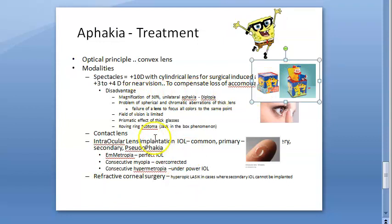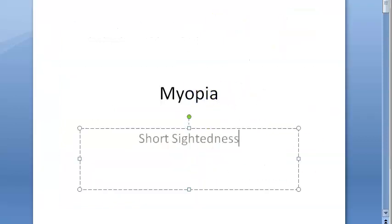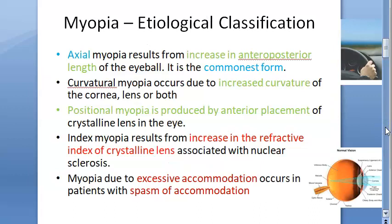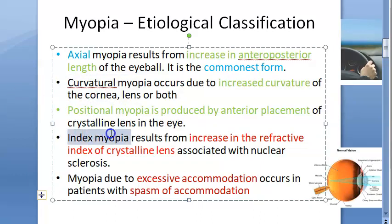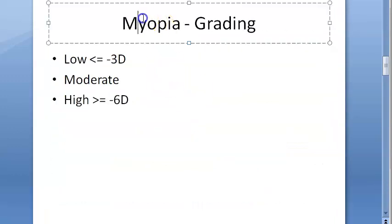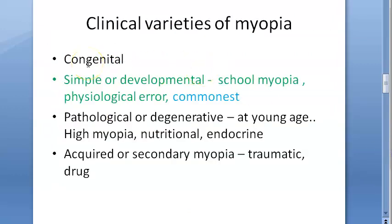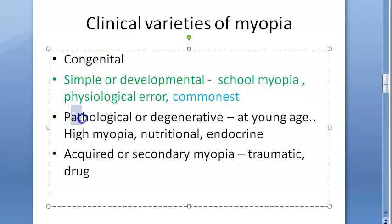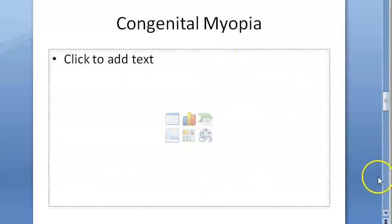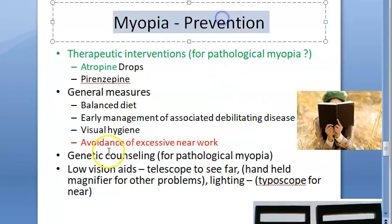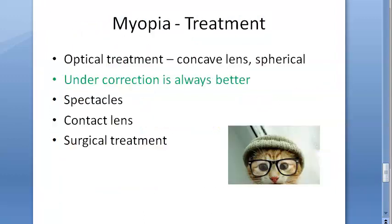Myopia means the image forms in front of the retina. You have axial myopia, curvature myopia, positional myopia, and index myopia. Grading: less than minus 3 diopters is low myopia. Types include congenital, simple/developmental/school myopia, pathologic myopia, and acquired or secondary myopia due to trauma or drugs. Prevention: avoid excessive near work.